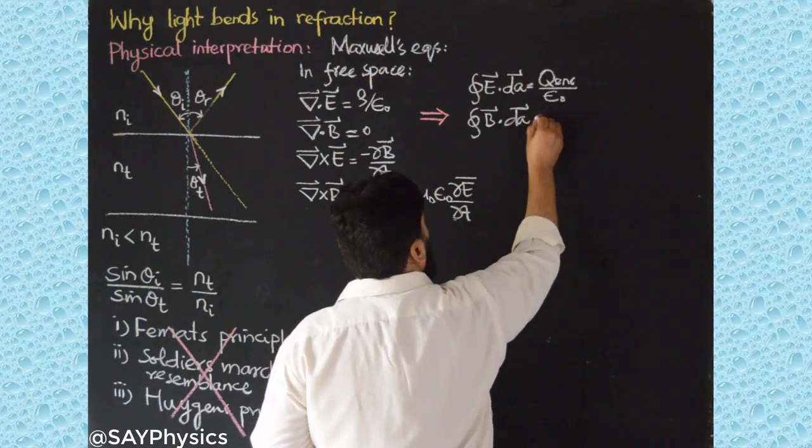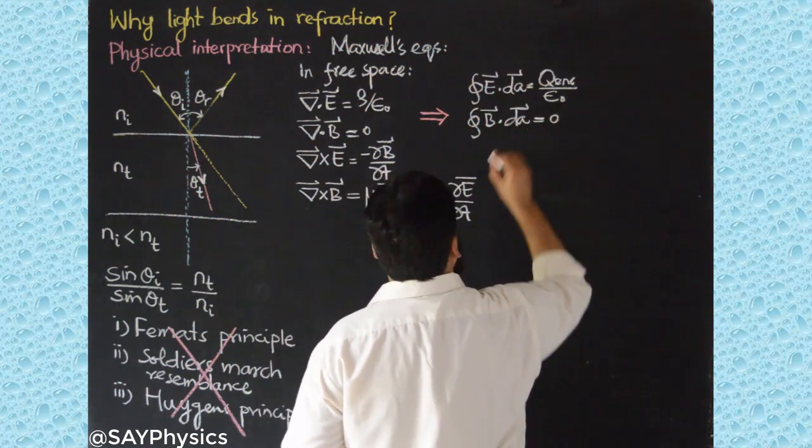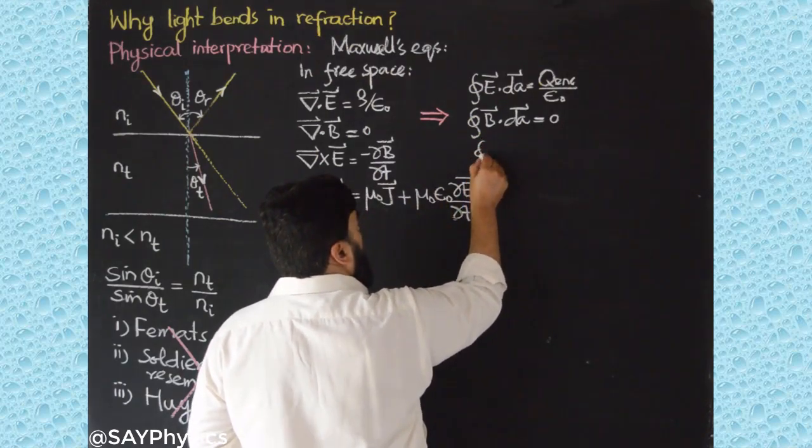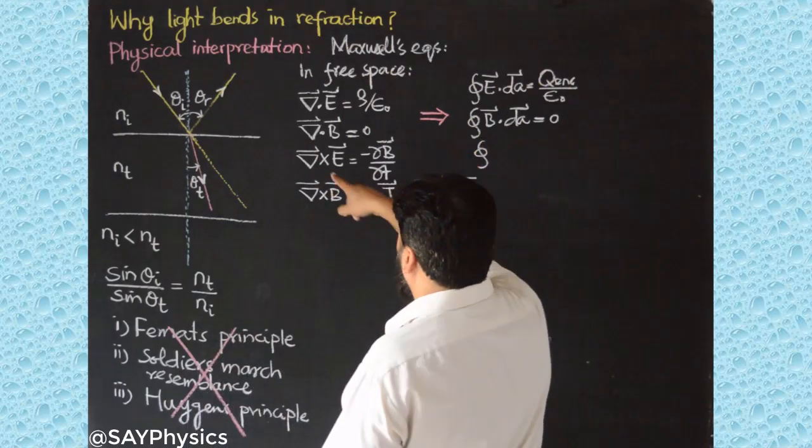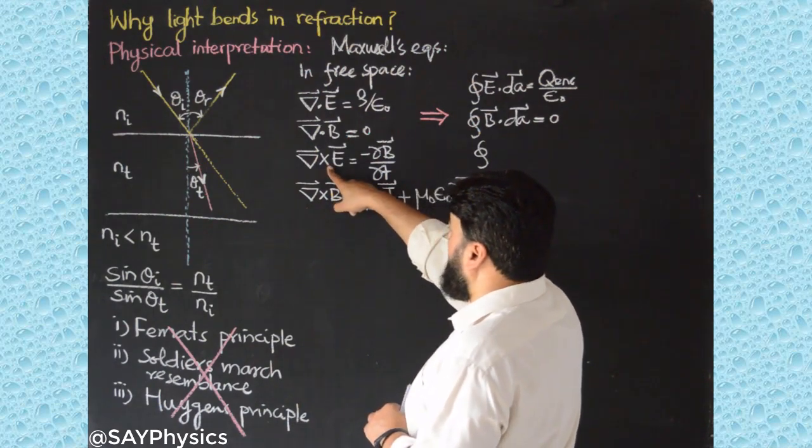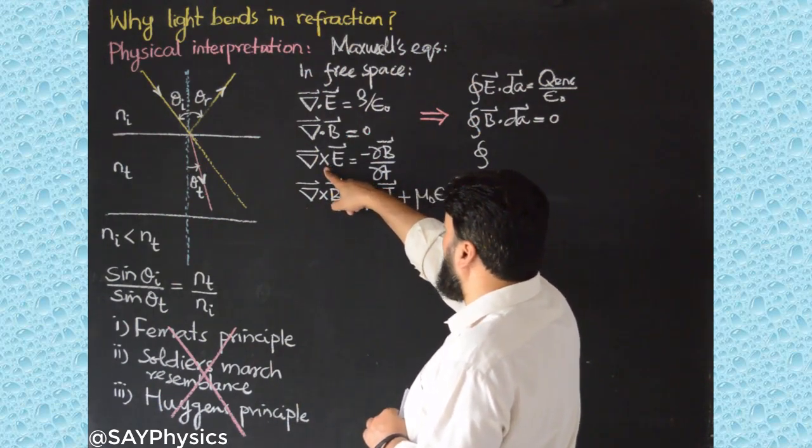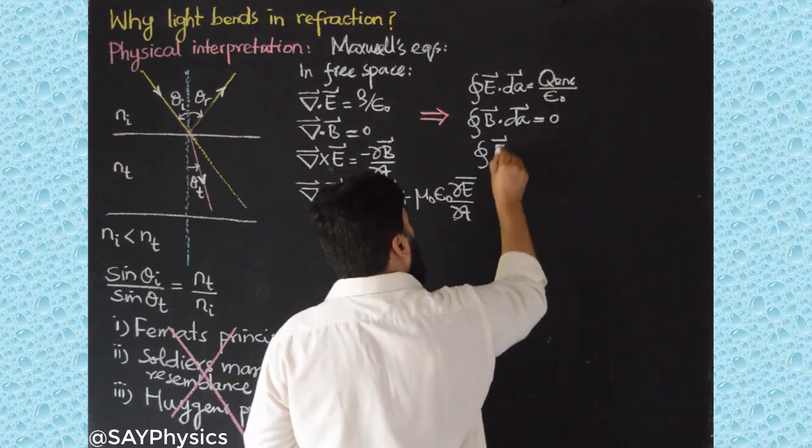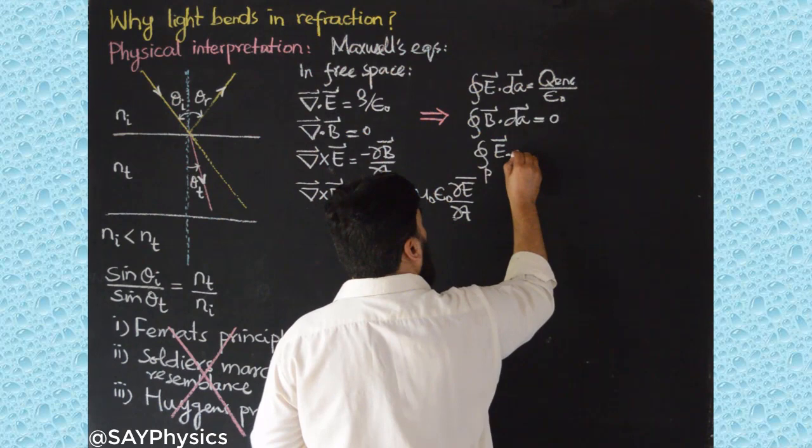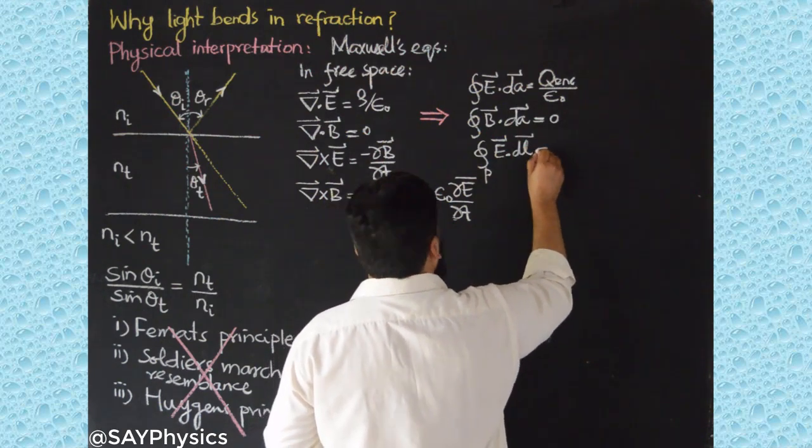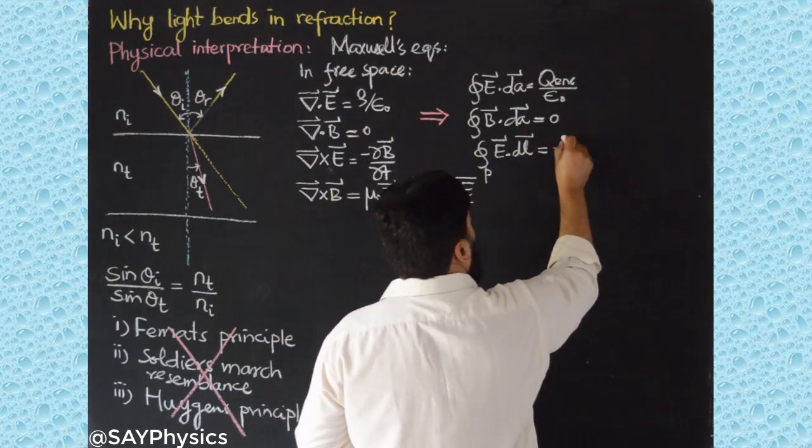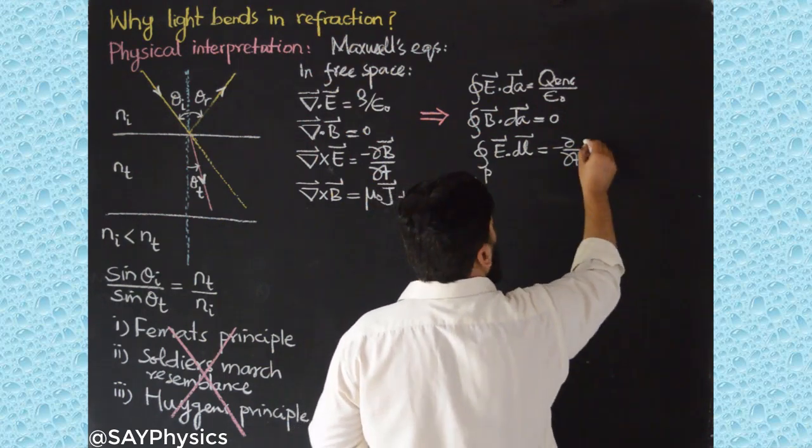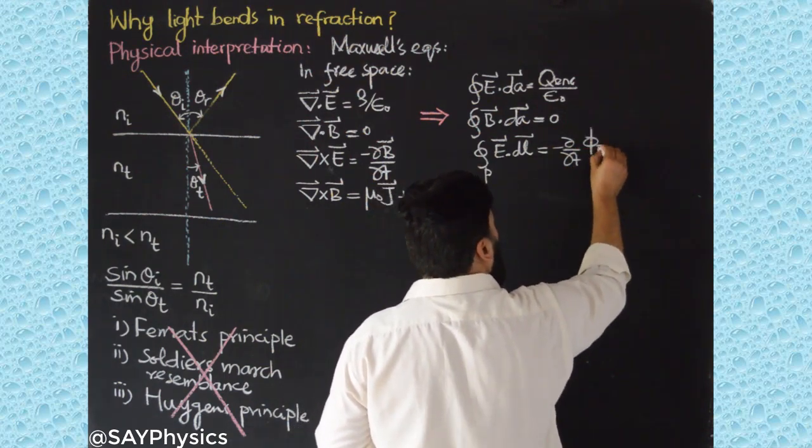Similarly, from Stokes theorem we will convert this one, then this will convert into a closed path integral E dot dL and this is equal to minus ∂/∂t of B dot dA, so it is actually the magnetic flux.